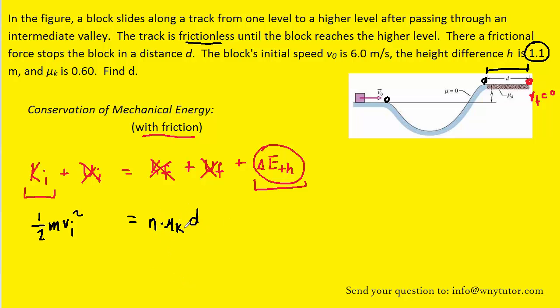But then we also want to note that the normal force is going to equal mg. Consider the box as it's sliding across the surface. It has a gravitational force of mg pointing down, and then the ground is pushing back up on the box. We call that the normal force. Those two forces are equal in magnitude, so we can replace the normal force in the equation with mg.